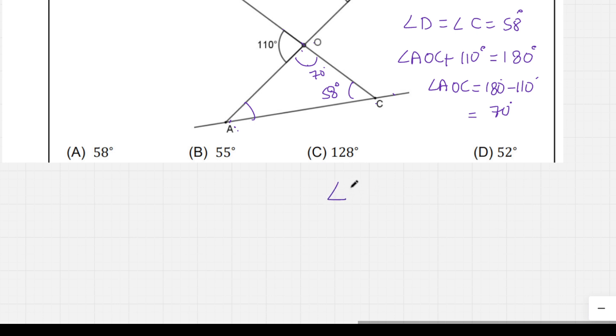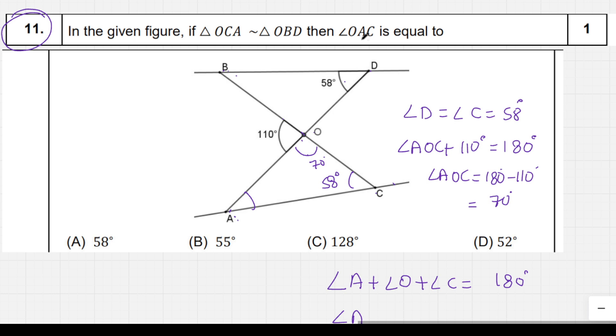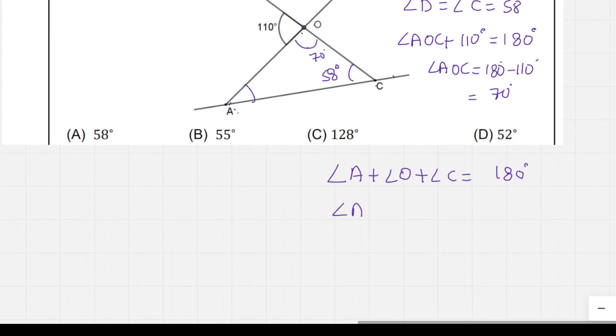Now in triangle AOC, angle A plus angle O plus angle C equals 180. The angle A we need is actually angle OAC. So angle OAC plus angle O which is 70 plus angle C which is 58.